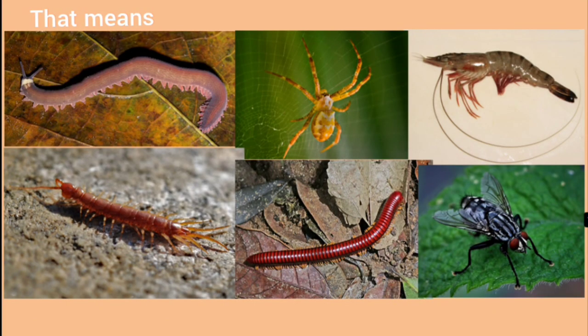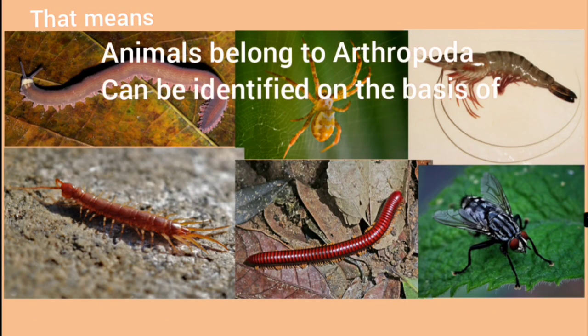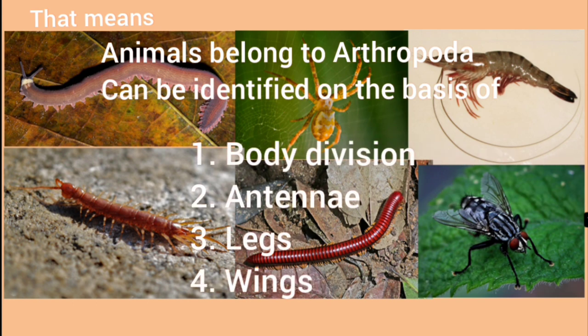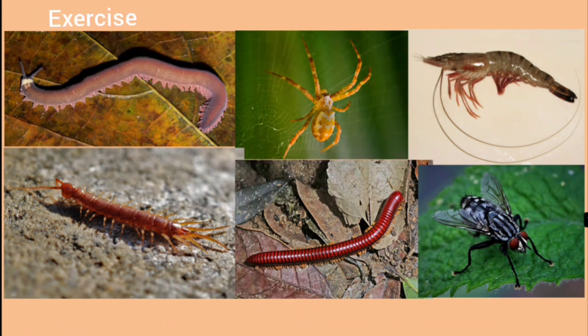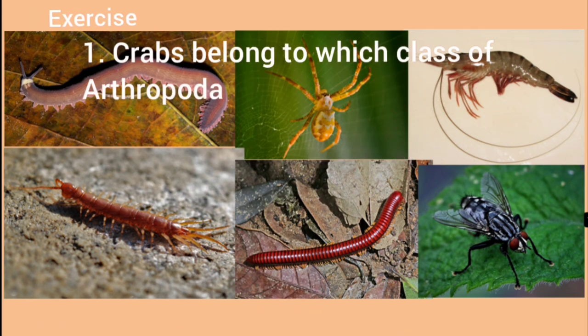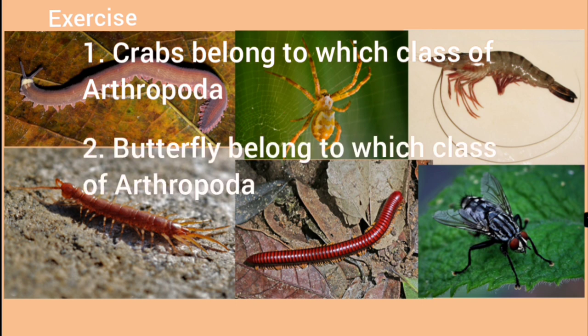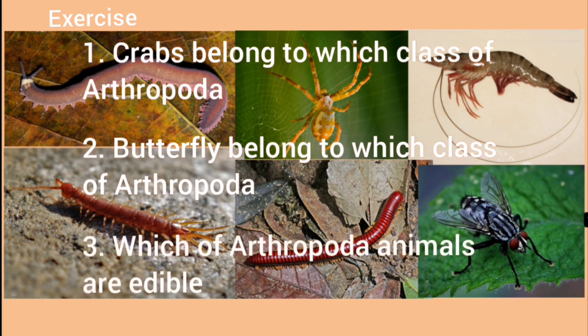Examples of Insecta include grasshoppers, butterflies, housefly, and bugs. Animals belonging to Arthropoda can be identified on the basis of body division, antennae, legs, and wings. Exercise for today: crabs belong to which class of Arthropoda? Butterflies belong to which class of Arthropoda? Which Arthropoda animals are edible? Please answer in the comment box.